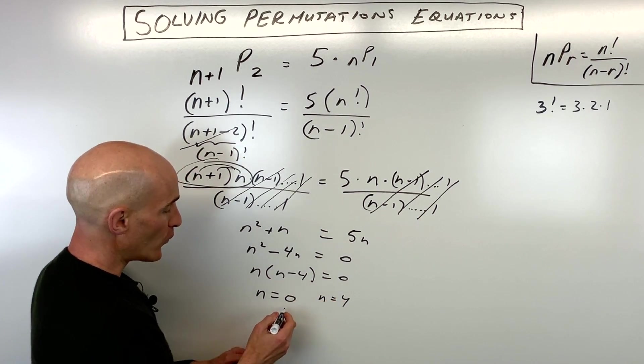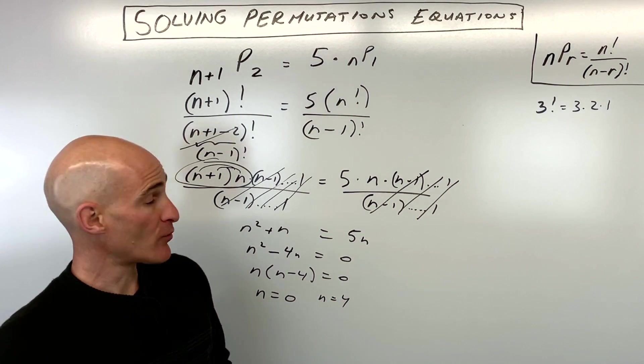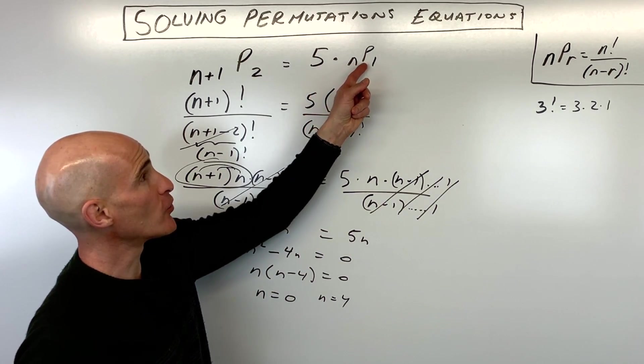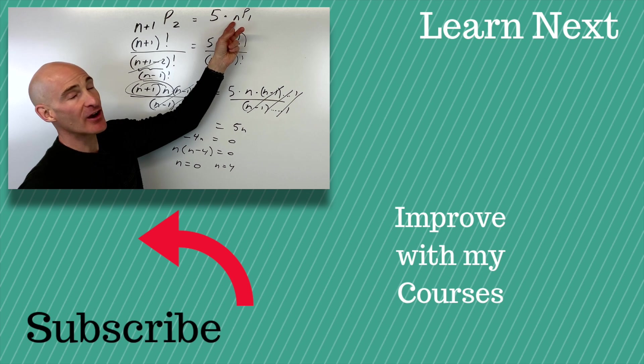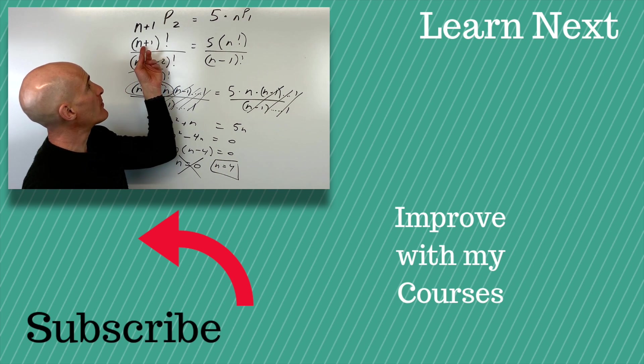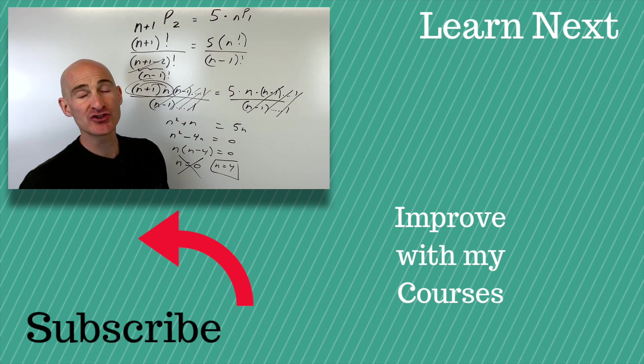Now in this particular problem, 0 doesn't really make sense, because we can't have 0P1. We can't pick one item out of 0, that's not possible. This is an extraneous root or solution. So it's just n equals 4, and you can verify that by putting it back in and making sure both sides of the equation equal each other.